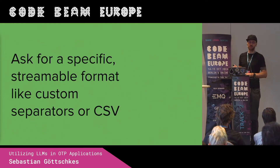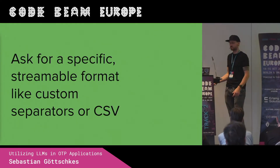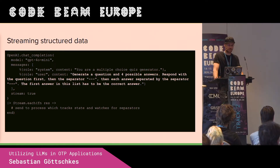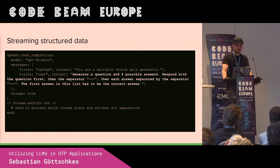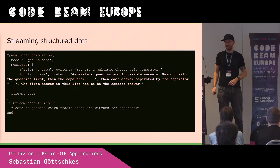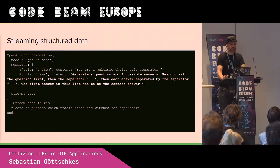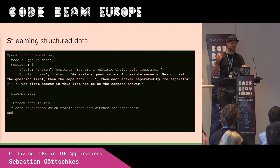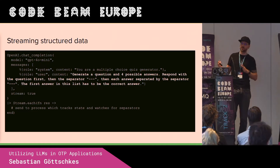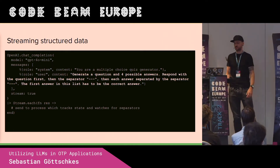You could also ask for a specific streamable format — what we did early on at Workera — such as CSV where it makes sense, or custom separators. For example, you could say: generate the question and answers and separate them with three dashes. If you are specific enough it usually works and is correct 99% of the time; you just need to iterate on the prompt. In your process that receives the stream, you wait for the three dashes and then you know the question is done and you're now in the first answer, and you can handle it directly in a LiveView and display it to the user.